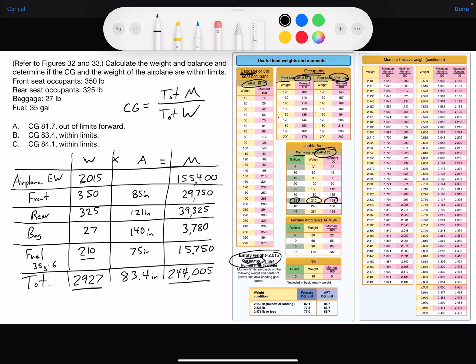Now, what you do is, using figure 33, the table on the right, we'll find our weight. And 2,927 is pretty close to 2,930. So that's what I'm going to use. And on the table, I can see I have weights right here.